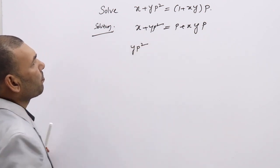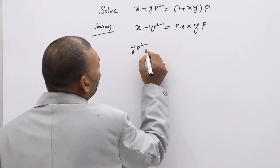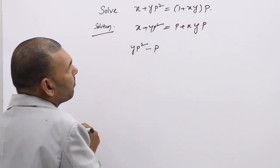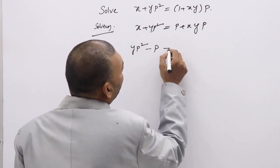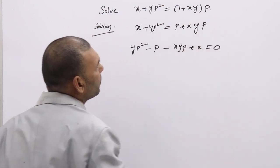yp squared. So yp terms you are adding there. Take yp squared plus p, if you take here minus p, minus xyp plus x equal to 0.